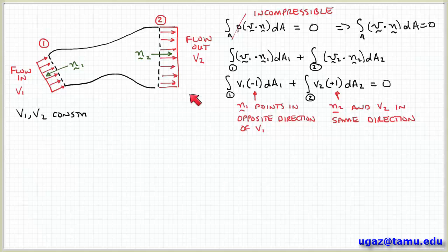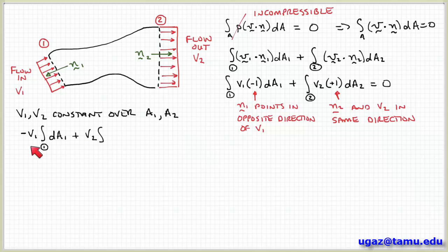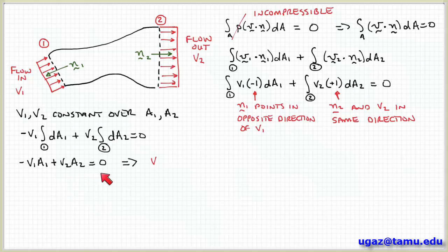And since the velocity is constant over the cross section, then we can pull that out of the integral. And so we just have minus V1 times the integral over surface one dA, plus V2 times the integral over surface two of dA. And the integral of dA over the area is just the area, A1, and similar for A2. So I get minus V1 A1 plus V2 A2 equals zero.